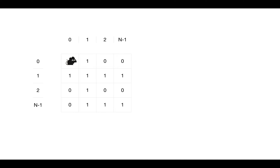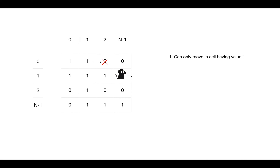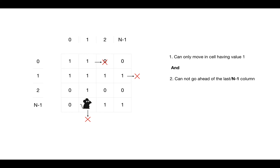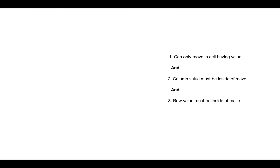The second element is the constraints, which we use to validate if the current step is safe to include. We can move in two directions — forward and downward — but there are constraints that restrict movement. The current cell can only be included in the path if it is inside the maze and has a value of one. If the cell value is zero, that means it's a wall. If you reach the last cell of a row or column, you cannot move further in that direction as it would be outside the maze.